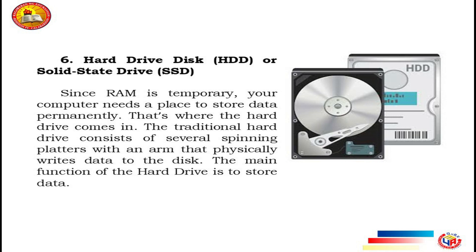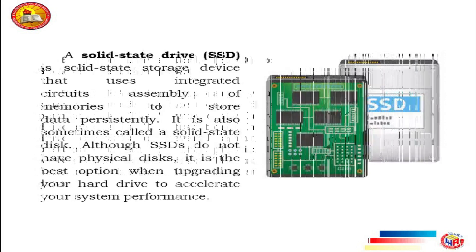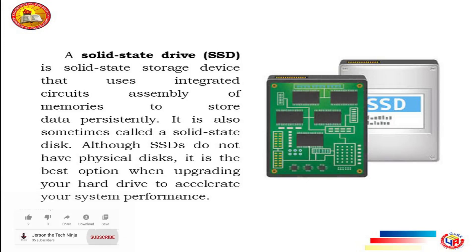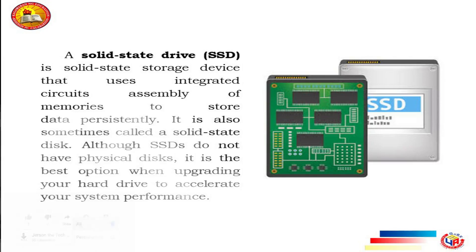RAM is temporary memory. Whenever you open up a Microsoft Word window, your computer places it in RAM, and when you close the window, that RAM is freed. Since RAM is volatile, its contents are lost if the machine loses power. This is why you lose a Word document when the power goes out, if you didn't save it.